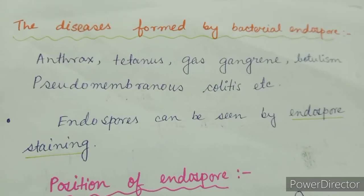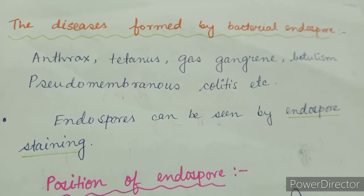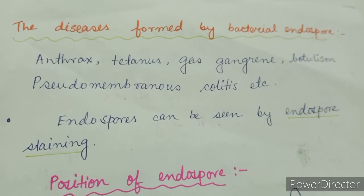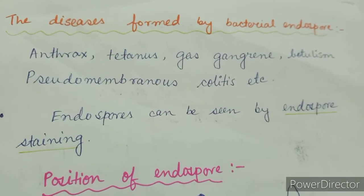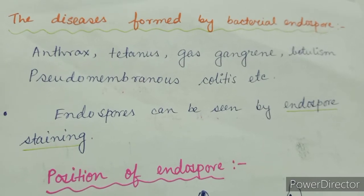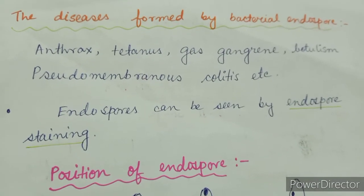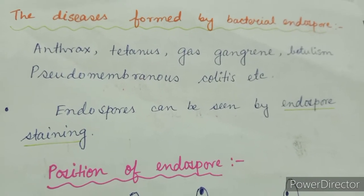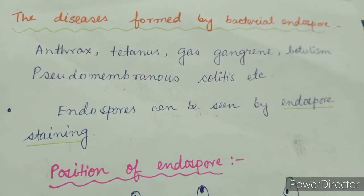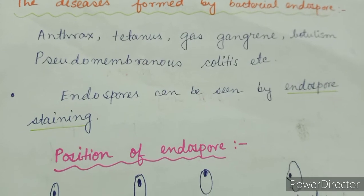The diseases caused by bacterial endospore-forming bacteria include anthrax, tetanus, gas gangrene, botulism, pseudomembranous colitis, etc. Endospores can be visualized by endospore staining, that is Schaeffer-Fulton staining.